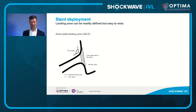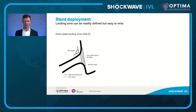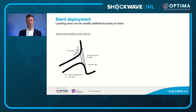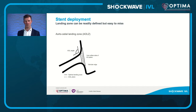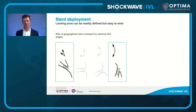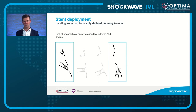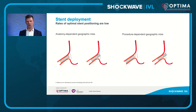Stent deployment is a challenge. The aorto-osteal plane is easy to draw in a diagram and easy to see on CT imaging, but very hard to visualize in a cath lab. The optimal landing zone — called the aorto-osteal landing zone — is one millimeter either side of the aorto-osteal plane. The problem is the angulation of coronary arteries: the more obtuse the angle, the more challenging it is to deliver stents appropriately. There are anatomically dependent geographical misses, and procedural failures where the stent is completely outside the optimal landing zone.